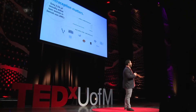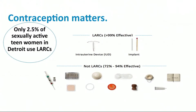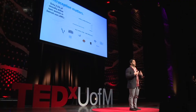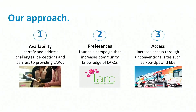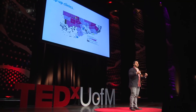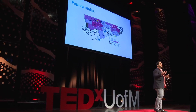On unintended teen pregnancy, we know that long-acting reversible contraceptives are the leading way to prevent it — modalities that don't require point-of-use effort; you don't have to take a pill every night or use a condom. But unfortunately only about 2.5% of young women in Detroit use these, even though they're first line. We're taking a multimodal approach: making sure doctors in Detroit know how to use them, making sure people know these options exist — like implants or IUDs good for three to five years — and providing access in discreet, non-stigmatizing places like rec centers.